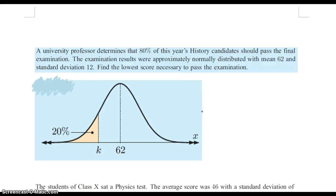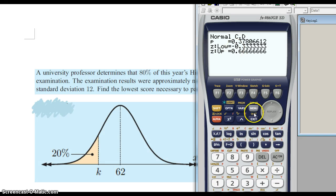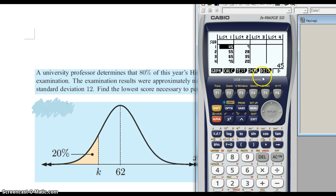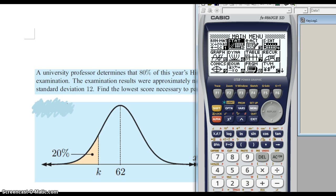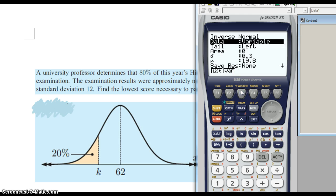Here's the idea: you do the same thing with your calculator with a slight variation. You do distribution. So again, menu, stat, distribution, norm. But instead of doing NCD, we're doing the inverse of that. Inverse N. So you click on inverse N.